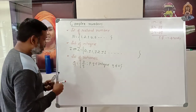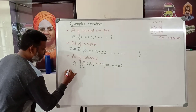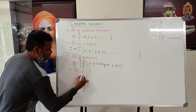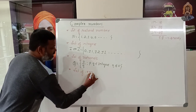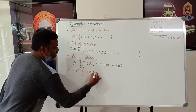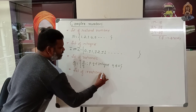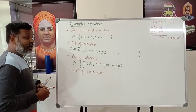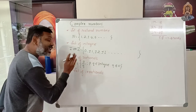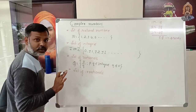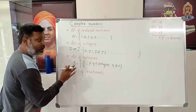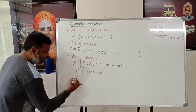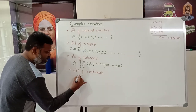Another very important number system is the set of irrationals. The set of irrationals consists of numbers which cannot be expressed in the form p/q — that means, the numbers which are not rational. It is denoted by Q′.